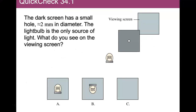Quick check: we have a light bulb, there's a small hole in a dark screen, and we want to see what image forms on the other side on the viewing screen. It must be an inverted image — the rays from the top go through the aperture and appear at the bottom, and the rays from the bottom of the light bulb go through the aperture and appear at the top. So B is the correct answer.